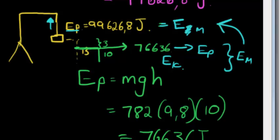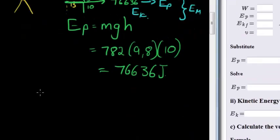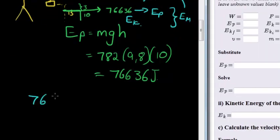So it means it must be the same as that. So what we have is that potential energy of 76636 Joules plus the kinetic energy at that point must equal the